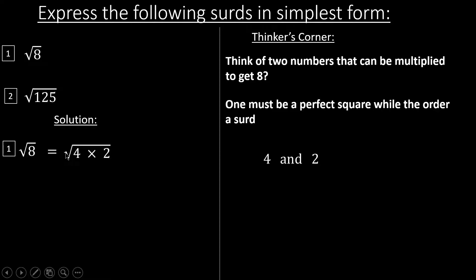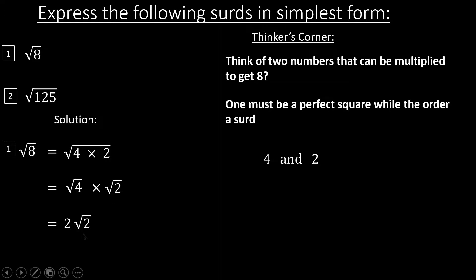So root 8 becomes root of 4 times 2. We can split this into two: it becomes root 4 times root 2. Root 4 is 2, so this becomes 2 times root 2. This is the simplest form of the surd for root 8, and this is my final answer.